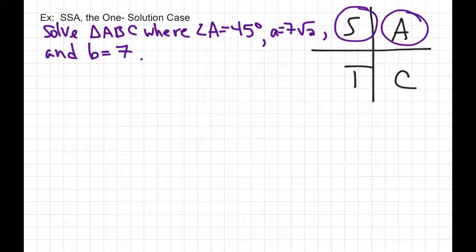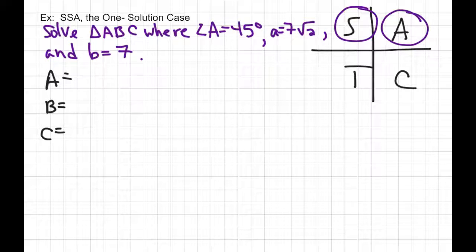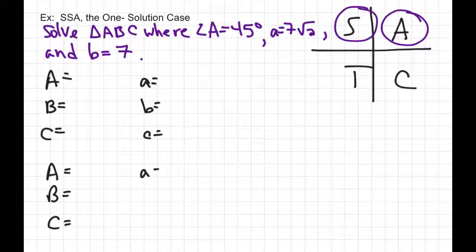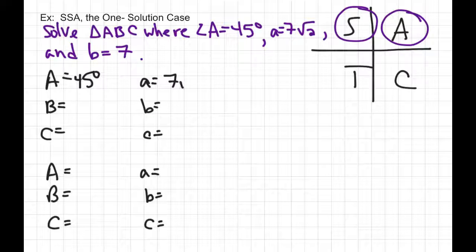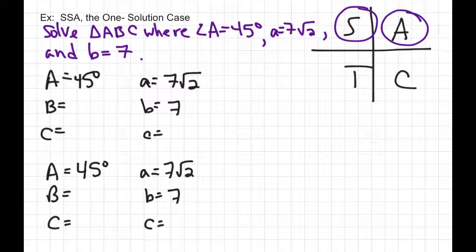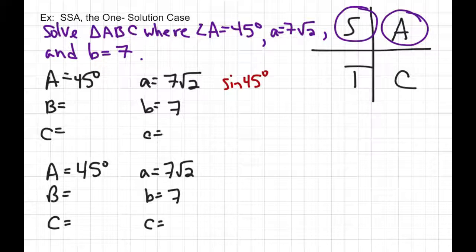Let's do a case with only one solution. We'll solve triangle ABC where angle A is 45 degrees, side a is 7√2, and side b is 7. We'll start by making our chart. Because taking an inverse sine has the possibility of a second solution, set up a second chart — we may or may not use it. Put in the givens, which will be the same in both charts. Given the information, the first thing to find is angle B. Set up the Law of Sines: sine of 45 degrees over 7√2 equals sine of angle B over 7.